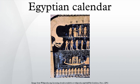The heliacal rising of Sothis returned to the same point in the calendar every 1460 years. The difference between a seasonal year and a civil year was therefore 365 days in 1460 years, or one day in four years.